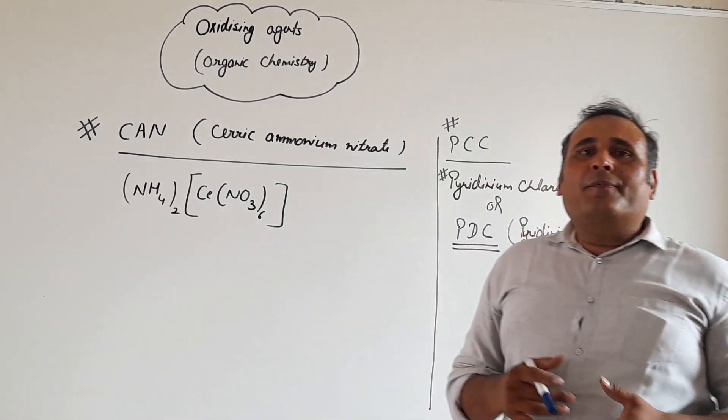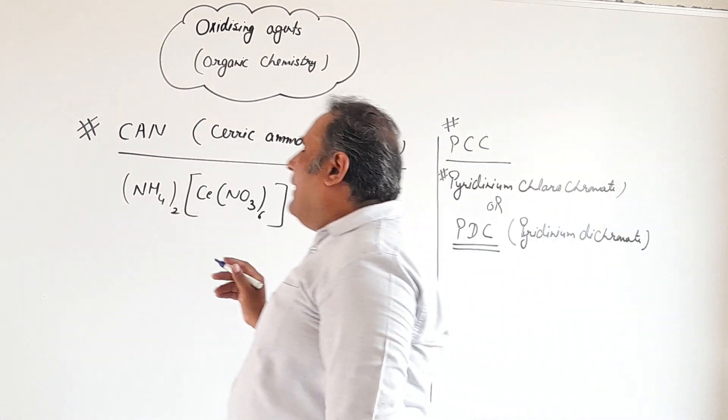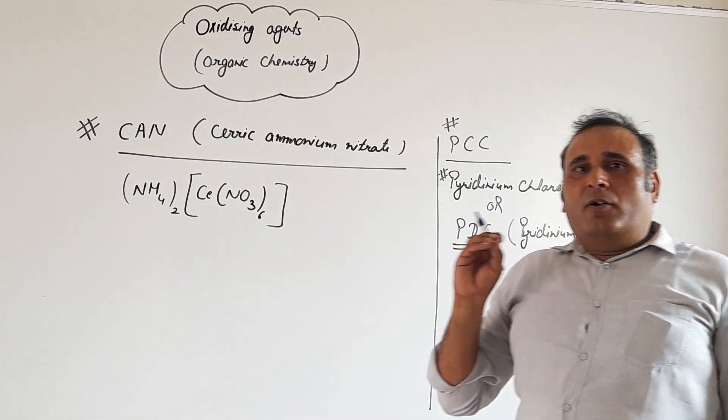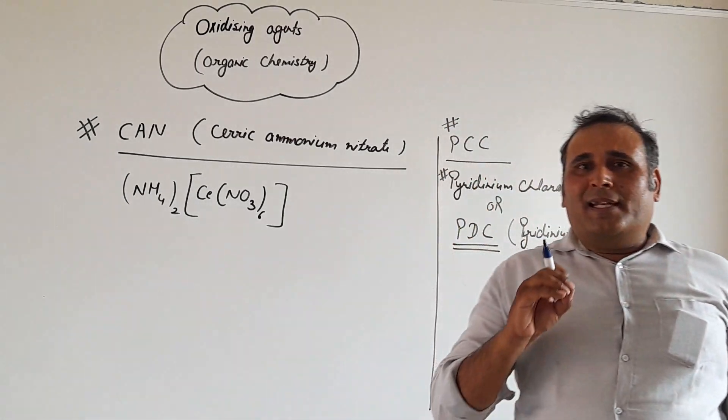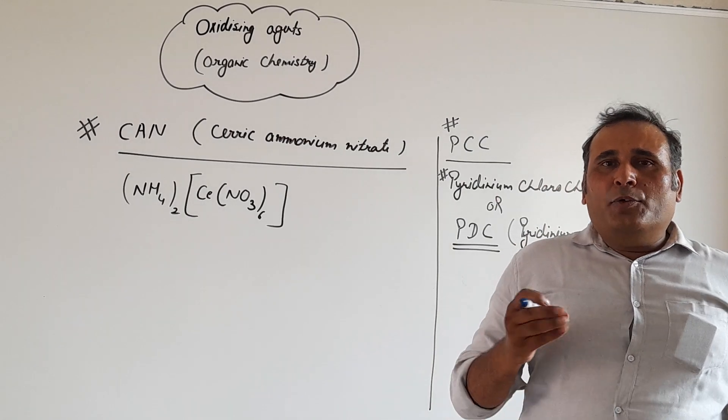So let's see what is the function of CAN, Ceric Ammonium Nitrate. Ceric Ammonium Nitrate does not oxidize double bond or triple bond. It oxidizes 1 degree alcohol selectively into aldehyde as well as 2 degree alcohol into ketone.